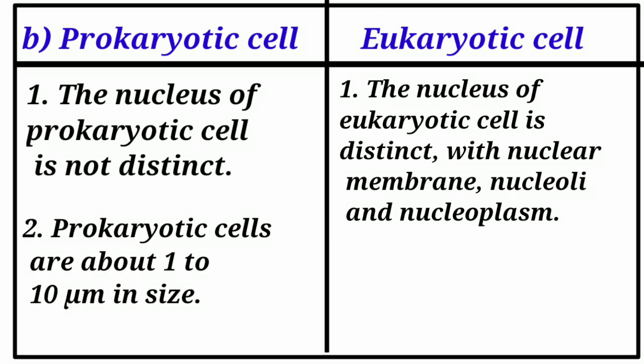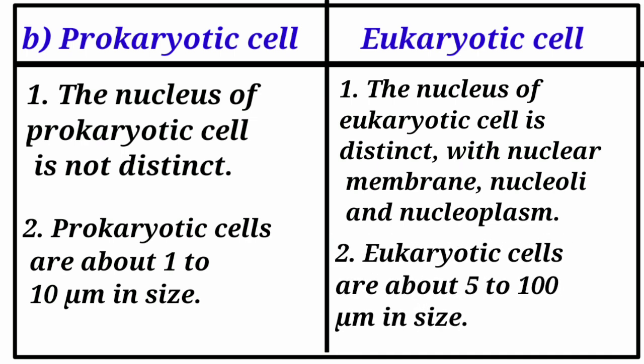Eukaryotic cells: The nucleus is with nuclear membrane, nucleoli, and nucleoplasma. Prokaryotic cells are about 1 to 10 micrometer in size. Eukaryotic cells are about 5 to 100 micrometer in size.